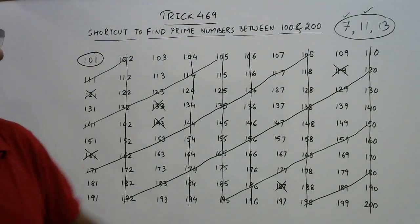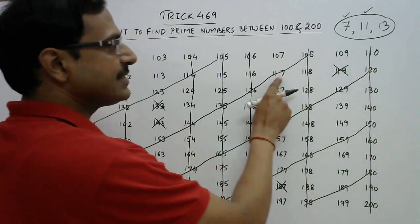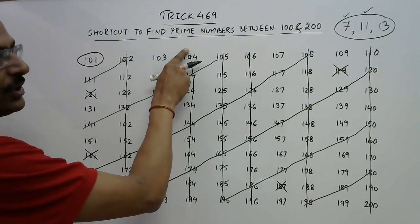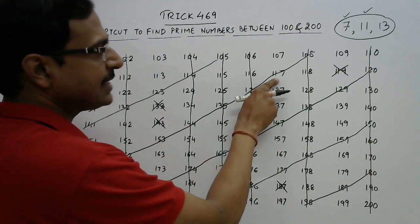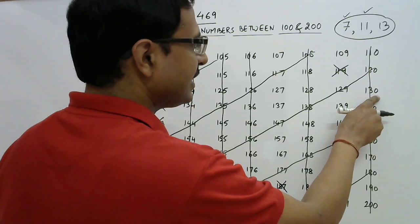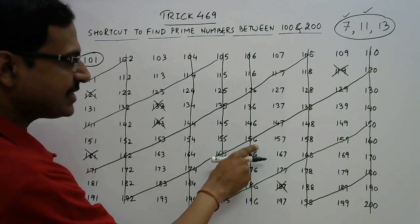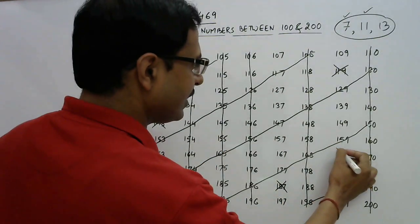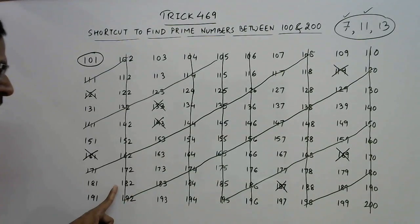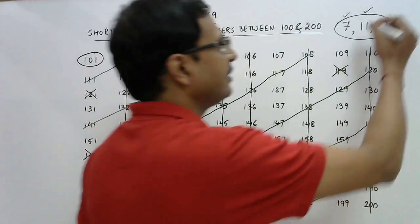Now come to 13. 13 eights are 104 and 13 nines are 117, which is already struck off. 13 tens are 130; 130 plus 13 is 143, which is already struck off. Plus 13 is 156; plus 13 is 169 — here we have a new multiple of 13 to strike off. 169 plus 13 is 182; plus 13 is 195. Now we are done with 13 as well.